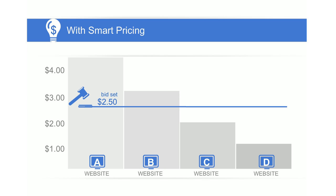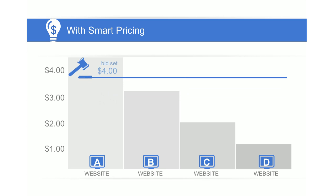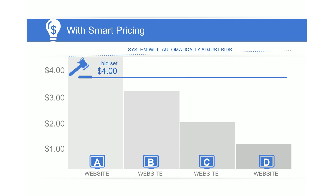An advertiser can then confidently bid the maximum they're willing to pay across all sites and leave it to our system to take care of the rest. So in this example, the advertiser can bid $4 across all four sites, and our system will automatically adjust the bids for each of the other sites to $3, $2, and $1, respectively.